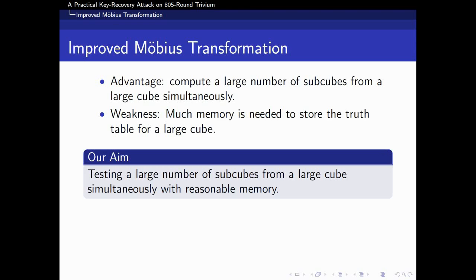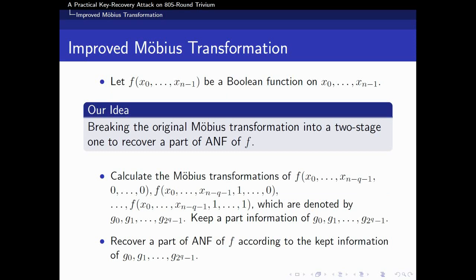Another contribution of this paper is the improved Möbius transformation. As mentioned before, the advantage of Möbius transformation is that it could compute a large number of subcubes from a large cube simultaneously. However, the weakness is that much memory is needed to store the truth table for a large cube. Hence, our aim is testing a large number of subcubes from a large cube simultaneously with less memory. Let f be a Boolean function on n variables. Our idea is breaking the original Möbius transformation into a two-stage one to recover a part of ANF of f.